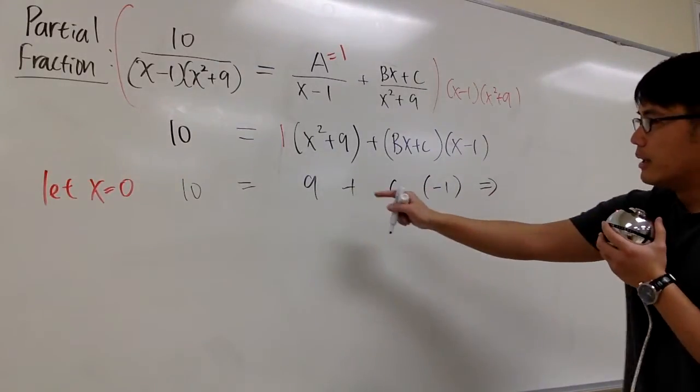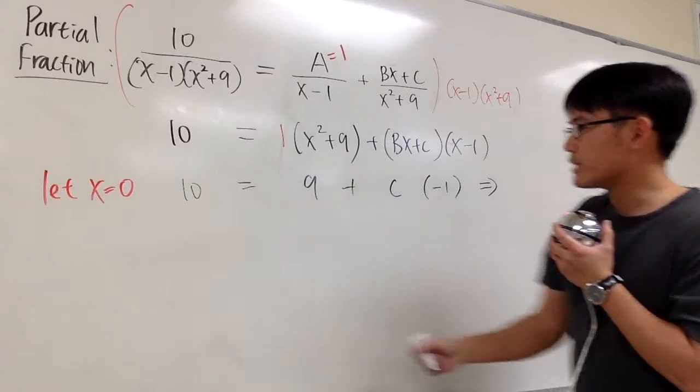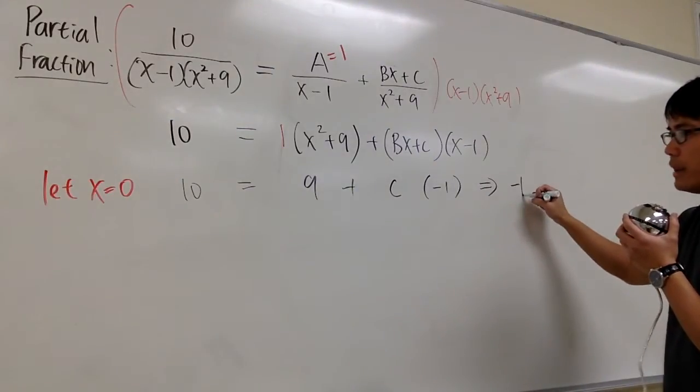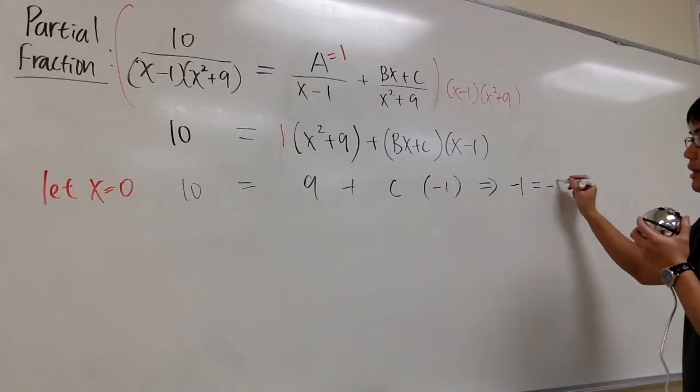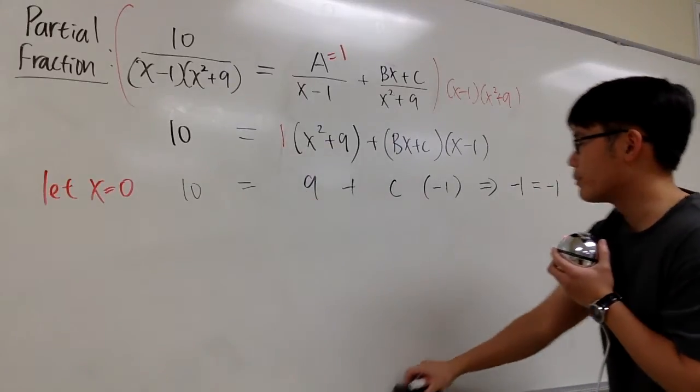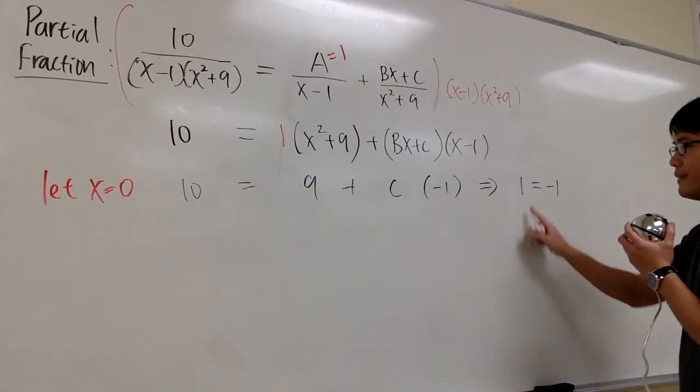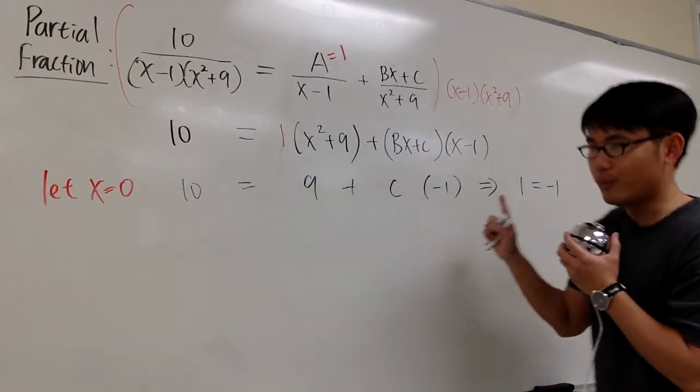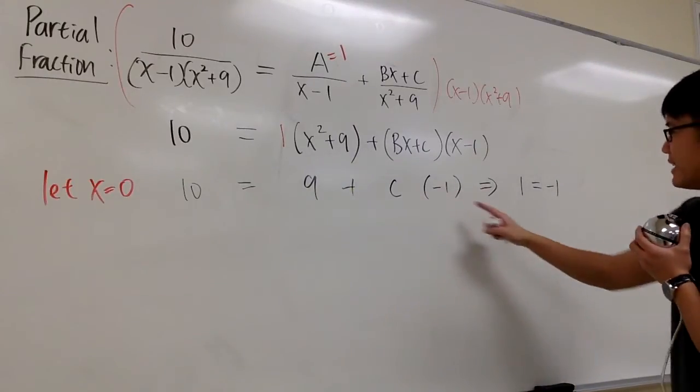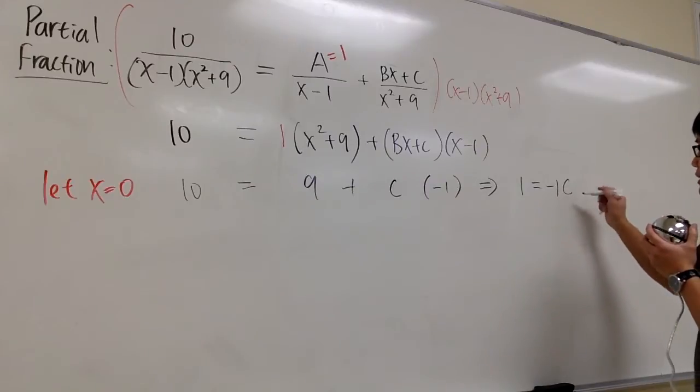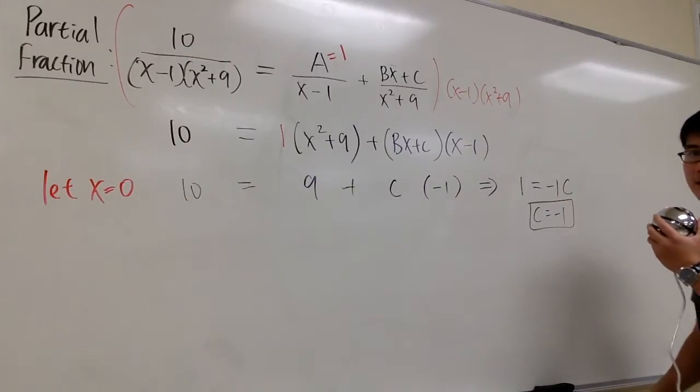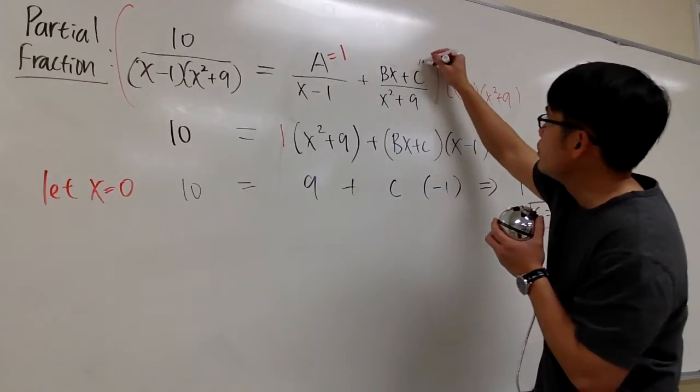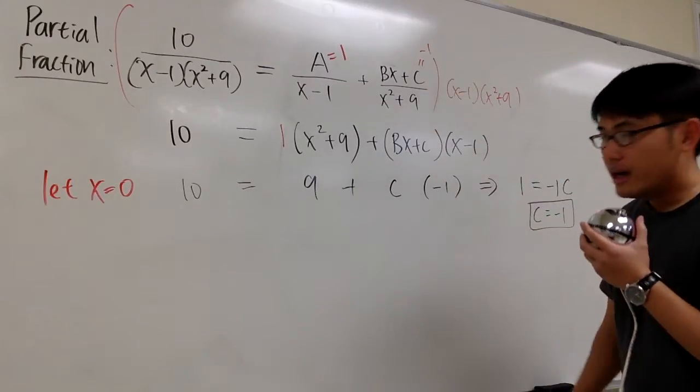So if you look at this equation, subtracting 9 on both sides, we'll have 1. And C times -1 is -C. So in other words, C is equal to -1. So we know that as well. C is equal to -1.